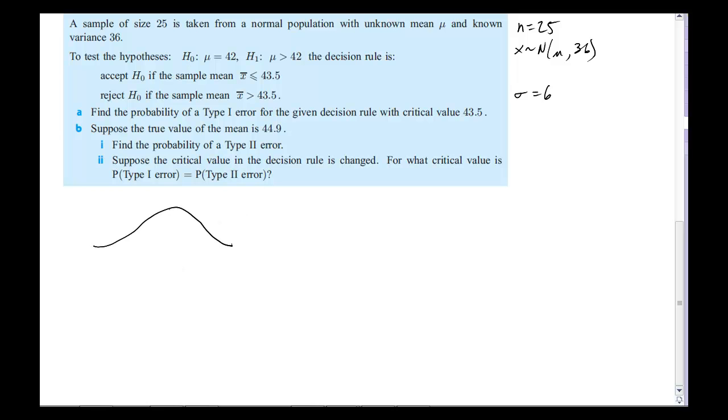What does this look like? Well, we're given the null hypothesis that the mean is 42, and we're saying if X̄ is greater than 43.5, so if the sample mean is larger than that, then we reject the null hypothesis. Okay, so letter A asks for exactly that: Find the probability of a Type 1 error for the decision rule with critical value of 43.5.